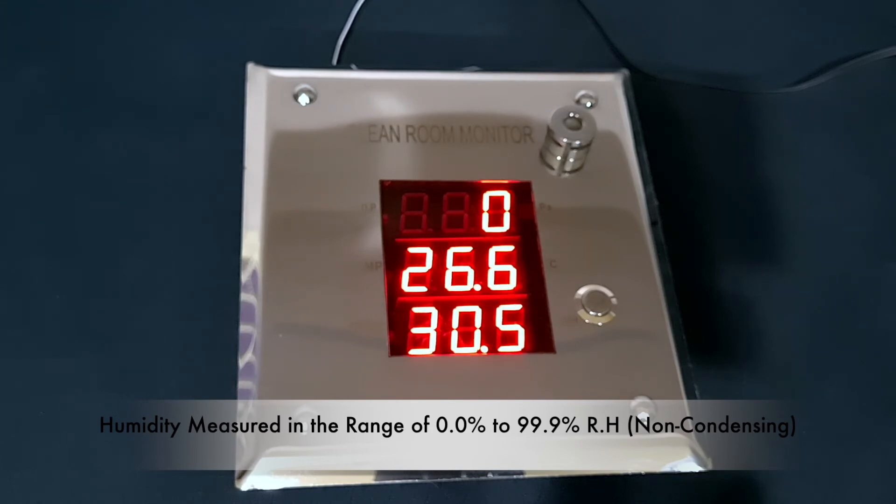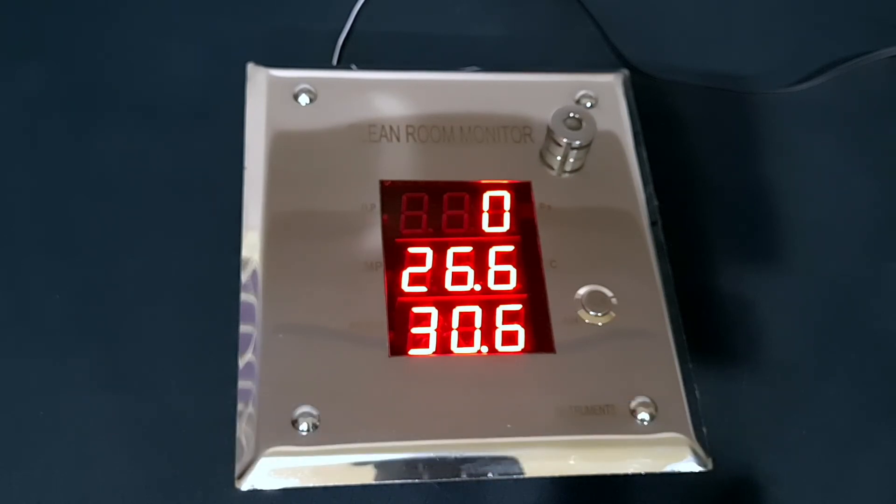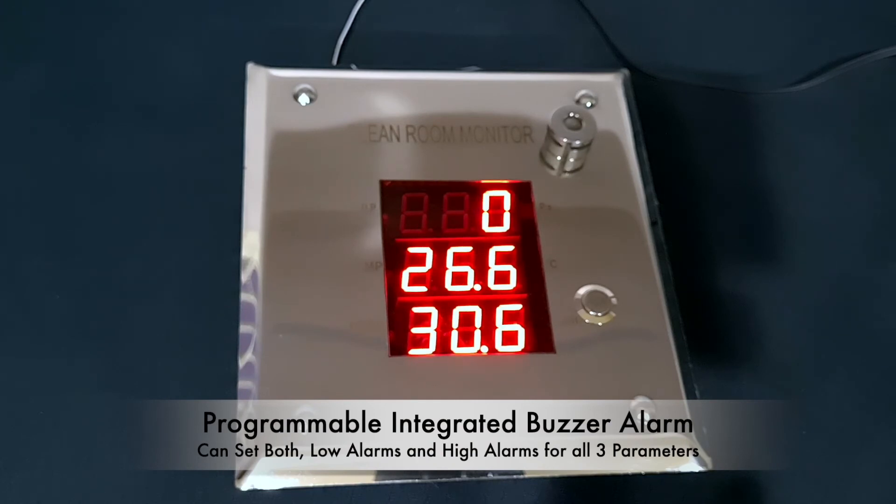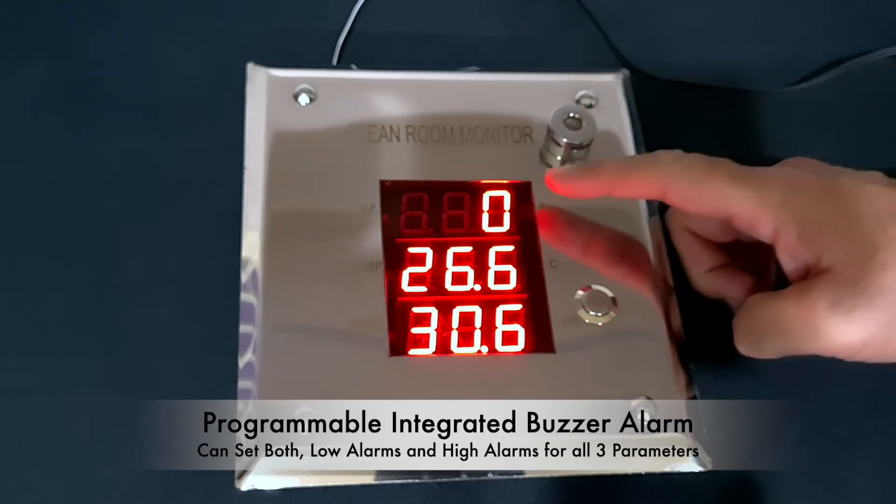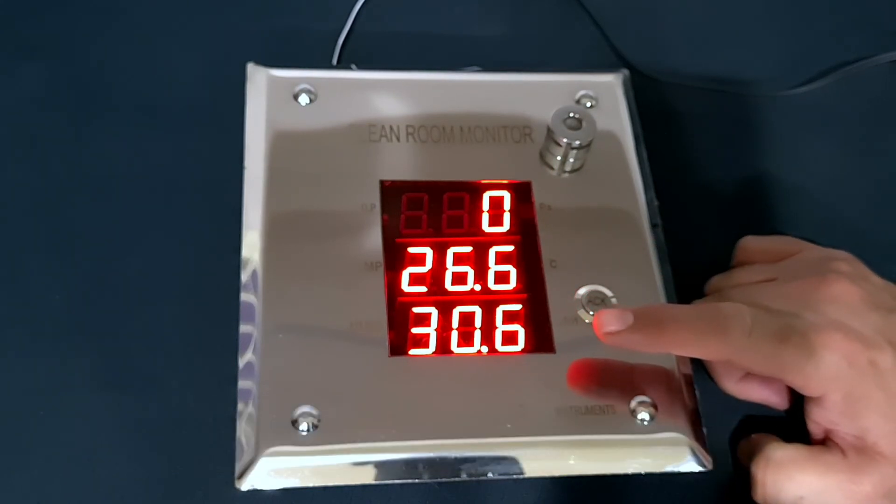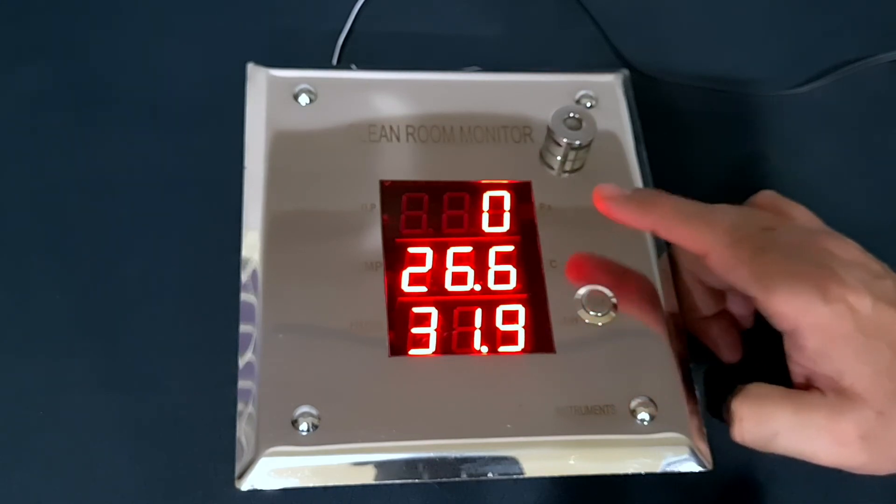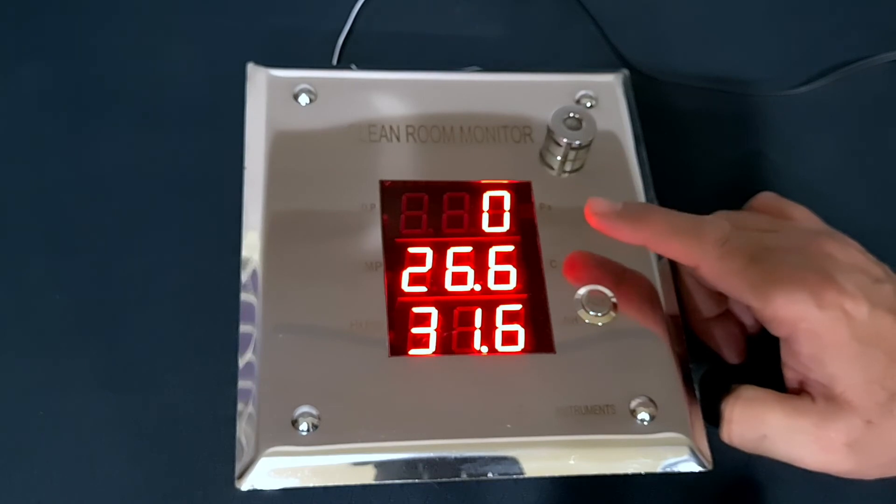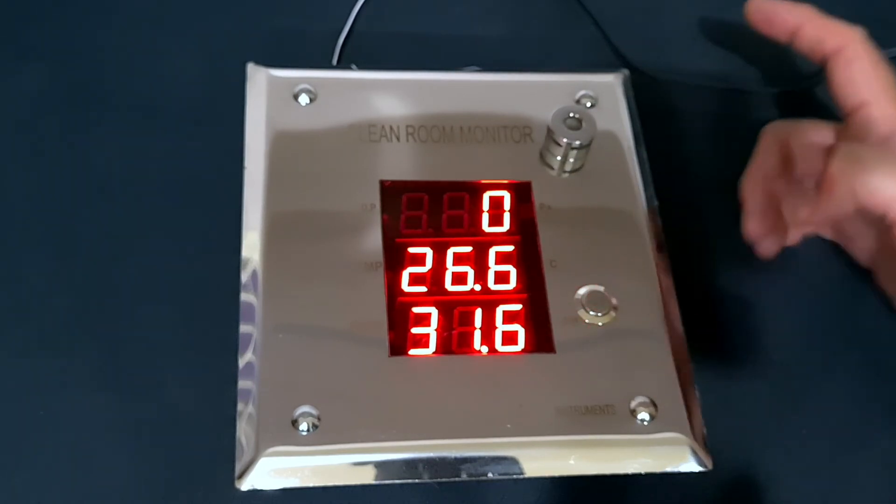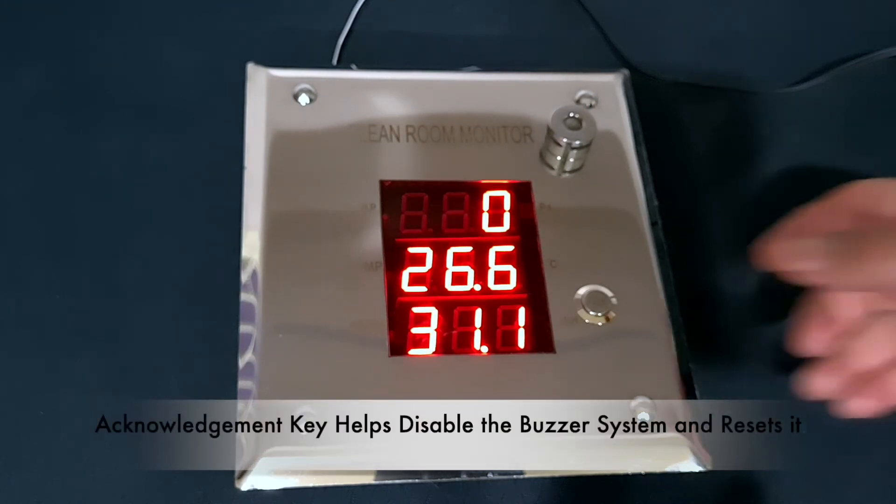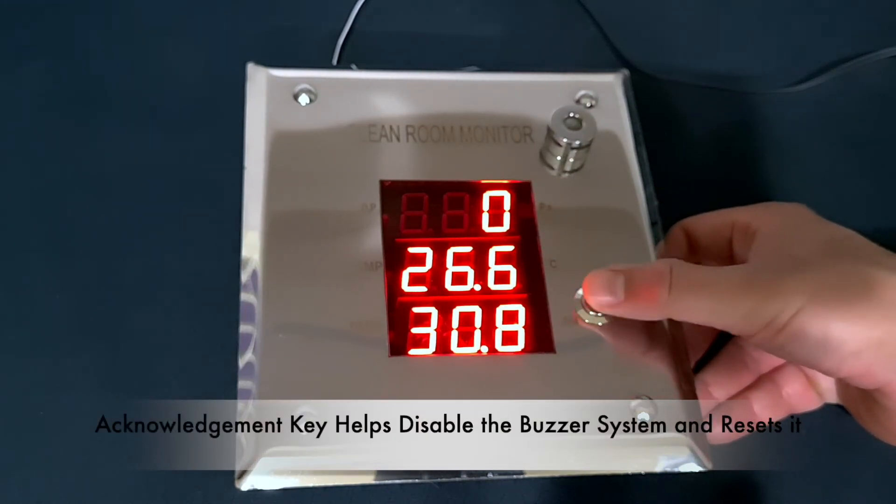The Ace Clean Room Monitor has an integrated buzzer alarm which can be programmed by the user for any ranges, both low alarm and high alarm, for each of the three parameters of differential pressure, temperature, and humidity. Whenever the readout goes below a certain set limit or above a certain threshold for any of these parameters, the buzzer triggers. There is also an acknowledgement key on the front plate which acknowledges or resets the buzzer alarm.